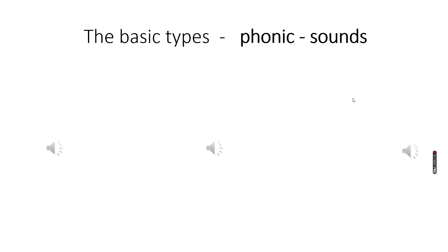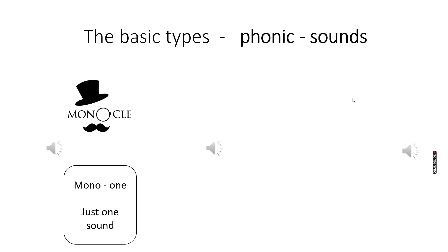There are three basic types of textures and they all end in 'phonic', which is Greek for sounds. First of all we have monophonic — we think of monocle, which means one, like one optical lens. So monophonic means one sound. Just like this example I'm going to play for you, where it's just a flute playing by itself — this is monophonic texture. One layer of sound interacting by itself.